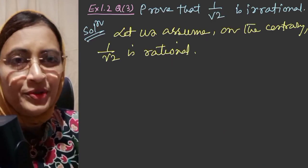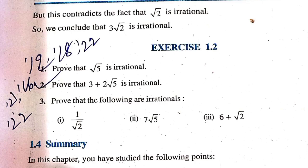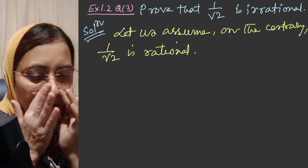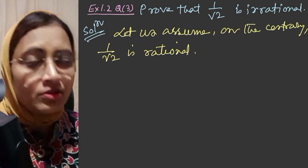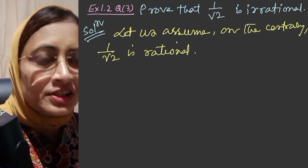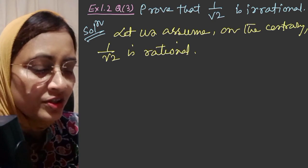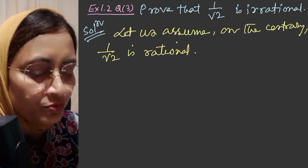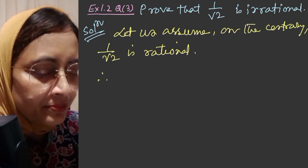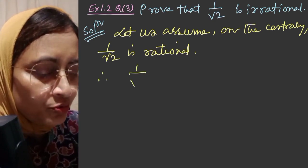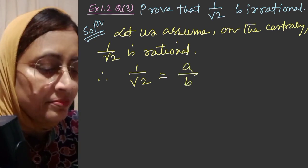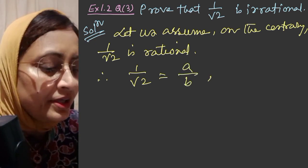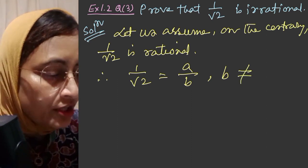Exercise 1.2, next question — Question number 3: Prove that 1 by root 2 is irrational. Solution: Let us assume on the contrary, using the method of contradiction, that 1 by root 2 is rational. Therefore, 1 by root 2 is equal to A by B, where A and B are integers and B must not equal zero.